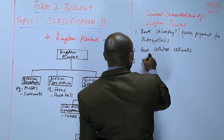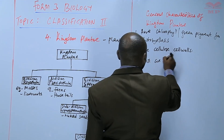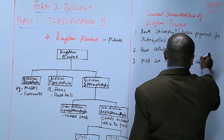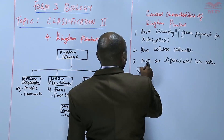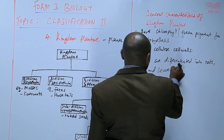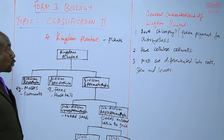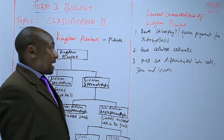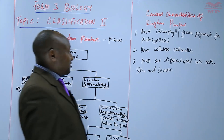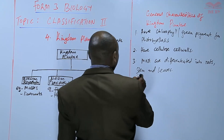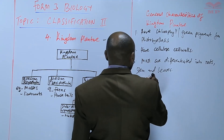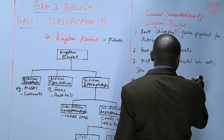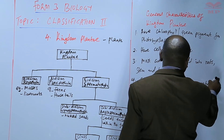Most of the plants are differentiated into roots, stem, and leaves, although not all of them. Members of Kingdom Plantae also show alternation of generations.